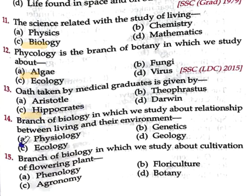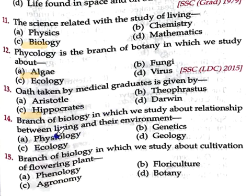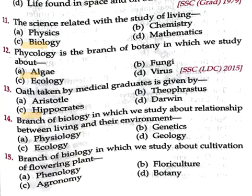Question 14: the branch of biology in which we study the relationship between living organisms and their environment. The options are Phycology, Physiology, Genetics, Ecology, and Geology. Option C, Ecology, is correct — it is the branch in which we study the relationship between living things and their environment.